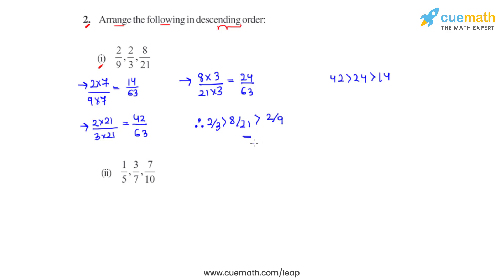So this is the descending order for the first part of this question. Coming to the second part, we again have three different unlike fractions, so we'll make them like by giving all three the same denominator. The LCM for 5, 7, and 10 is 70.